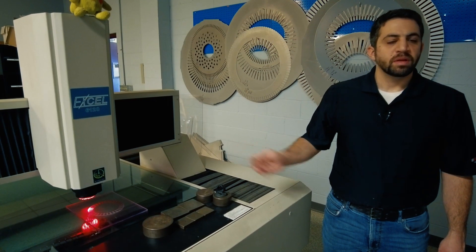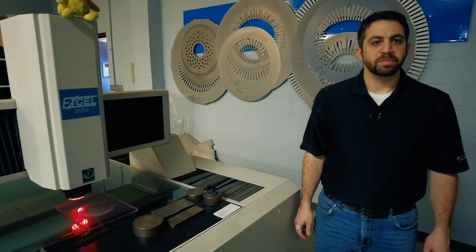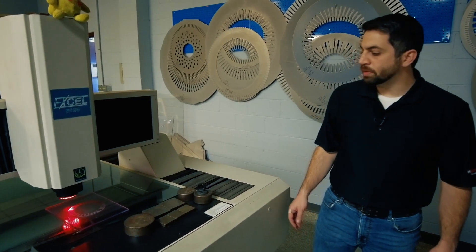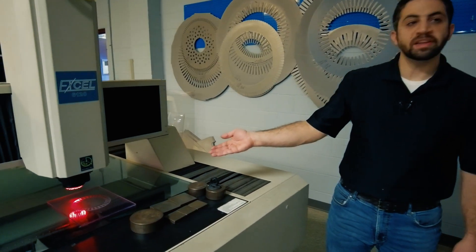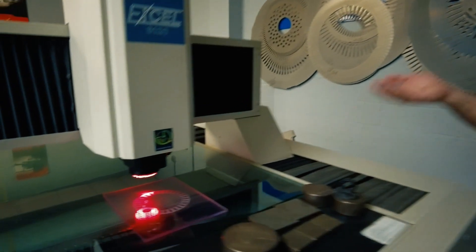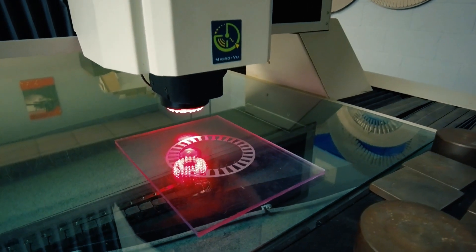This is our vision CMM checking parts optically for dimensional inspection. What we'll do is establish where the part physically is on our machine, both in the z height and x, y, and z, and what the orientation is.